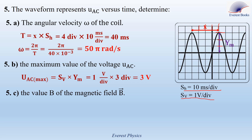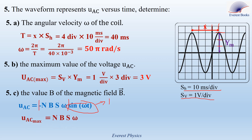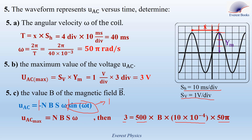Part five C: determine the value of the magnitude of the magnetic field. Uac equals minus NBS omega sine omega t, so the maximum value of Uac equals the absolute value of minus NBS omega, since the maximum value of sine omega t is one. Therefore, Uac maximum equals NBS omega. Replacing: Uac maximum equals three volts, N equals 500 turns, S equals 10 cm squared which equals 10 times 10 to the power minus 4 meters squared, and omega equals 50 pi radians per second. Therefore, B is equal to 0.038 tesla.